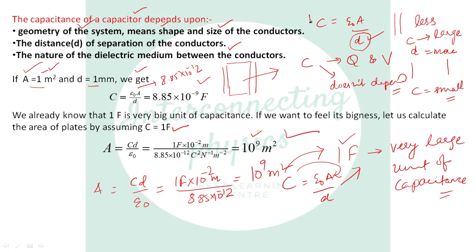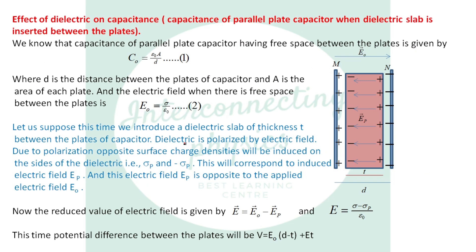So we derived the capacitance of a parallel plate capacitor as C equal to epsilon₀·A divided by D. It depends on the distance between the two plates and the area of the plates — if area is large, capacitance is large. Now let us look at the effect of dielectric on capacitance. We know that the capacitance of a parallel plate capacitor with free space is C₀ equal to epsilon₀·A divided by D, and for this case the electric field was E₀ equal to sigma over epsilon₀. Now let us introduce a dielectric between the two plates.